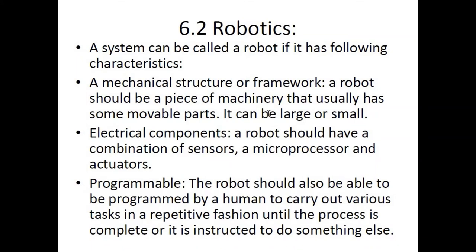A system can be called a robot if it has the following characteristics. First, it has a mechanical structure or framework — a piece of machinery that usually has some movable parts, which can be large or small. Second, it should have electrical components — a combination of sensors, microprocessors, and actuators. Third, and most importantly, it should be programmable — able to be programmed by a human to carry out specific or various tasks in a repetitive fashion.